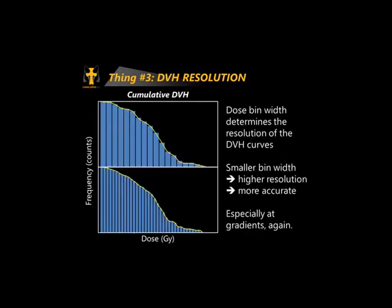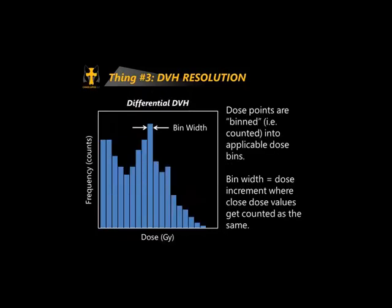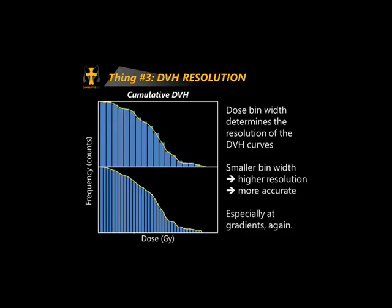When the bin width is too wide, doses that are quite different get thrown into the same bin, affecting the shape of your DVH curve. The bin width is really the delta dose increment where values are deemed equal and thrown together. You can see that the shape of the DVH — this is a cumulative DVH — changes as you go from a wide bin width to a smaller one. As with any resolution, the higher resolution you go, the more reliable your statistics are. The biggest effect is in gradient regions — the falling edge of a target DVH.